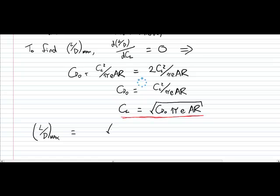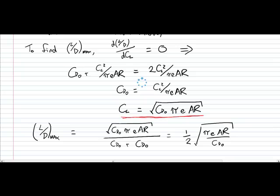So L upon D max is going to be L upon D when CL is that value there. And subbing in we're going to get CD0 pi E AR. Which is obviously square root of CD0 pi E aspect ratio over 2 CD0. And then we can simplify that again to 1/2 square root of pi E AR over CD0. So this is your value of L upon D max, and that occurs when CL is equal to the square root of CD0 pi E aspect ratio.